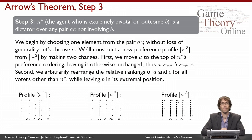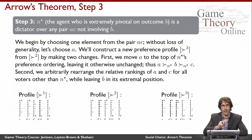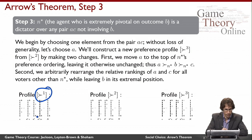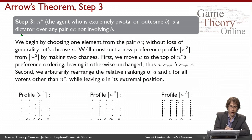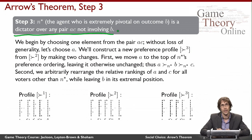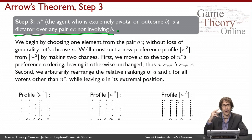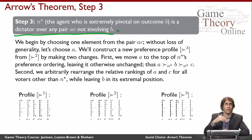Now let's get to Step 3. I want to reason about this same voter N*. Recall N* has special power over outcome B in a narrow way: there exists this one special profile PREF1 where he can move B from the bottom to the top. Now I want to claim something much stronger — that N* is a dictator over any pair A, C that doesn't involve B. That means the social welfare function must make every decision between any pair A, C — where neither is B — simply by listening to what N* thinks. If N* likes C better than A, the social welfare function will as well, regardless of what anybody else says.